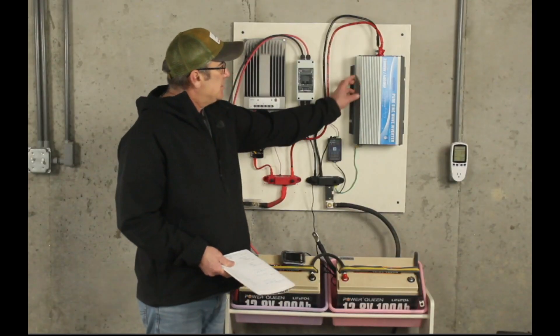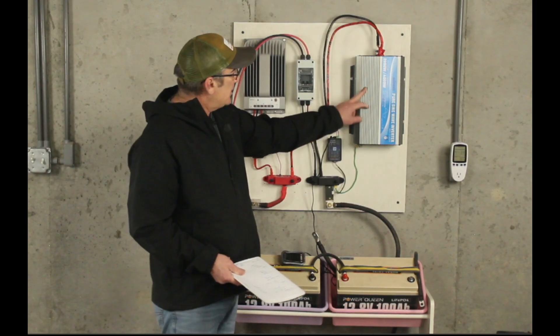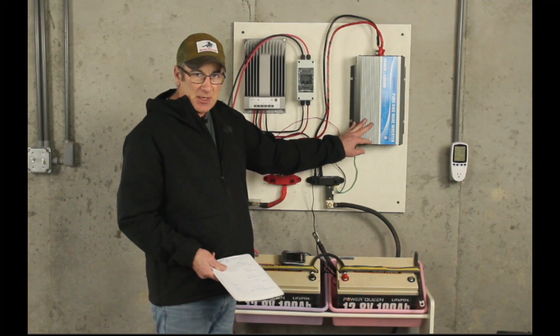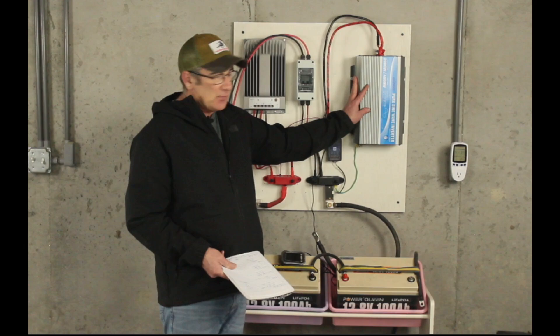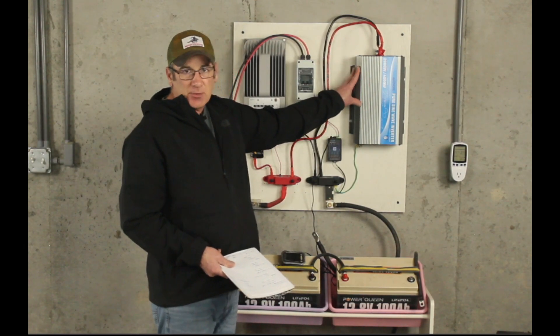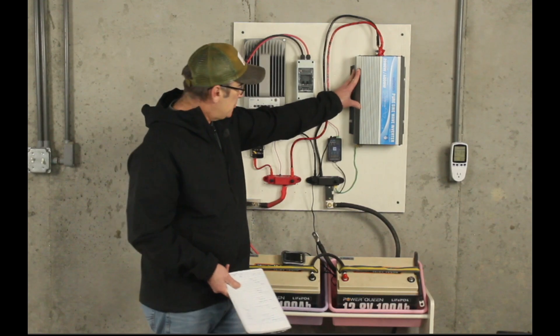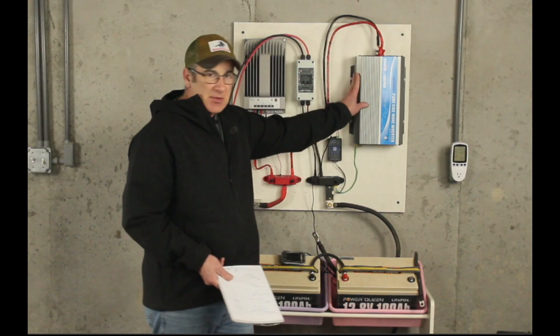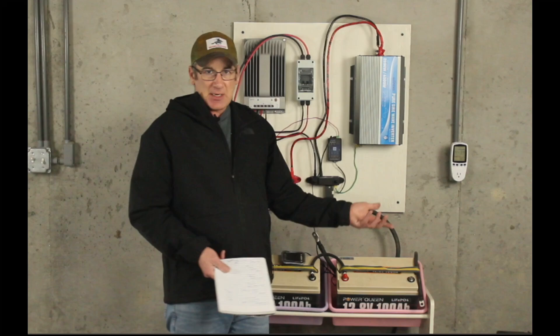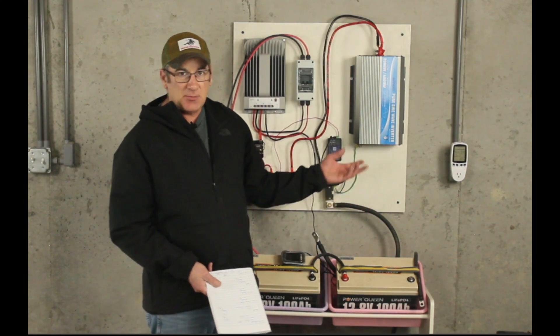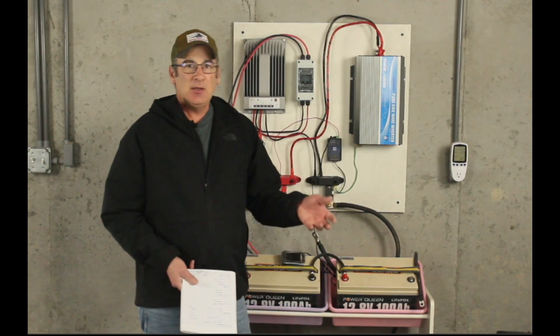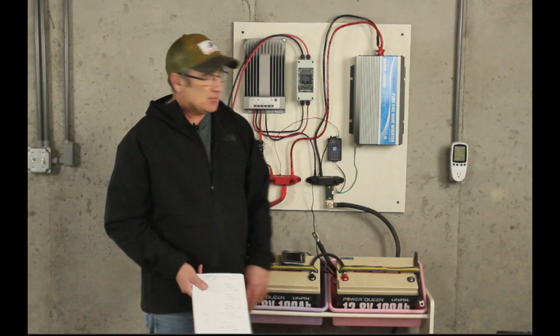Giandel, I think is the way you pronounce that. This is a pure sine wave inverter. It's again 24 volt. This is capable of 2000 watts continuous and up to 4000 watts surge power. So with this we would just run extension cords out in case of an emergency or whatever we needed to our deep freeze, to our refrigerator and things of that nature.